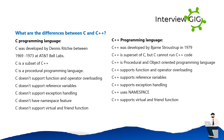C++ was developed by Bjarne Stroustrup in 1979. C++ is a superset of C, but C cannot run C++ code. C++ is both procedural and object-oriented. C++ supports function and operator overloading, reference variables, exception handling, namespaces, and virtual and friend functions.